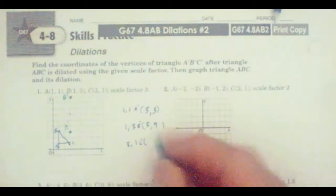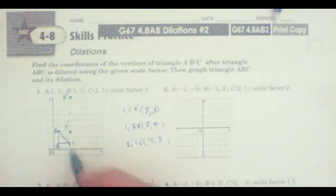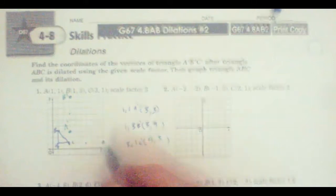Then we've got 3, 1. So this is going to be 9, 3. So here's 3, 6, 9. Here's going to be C prime.